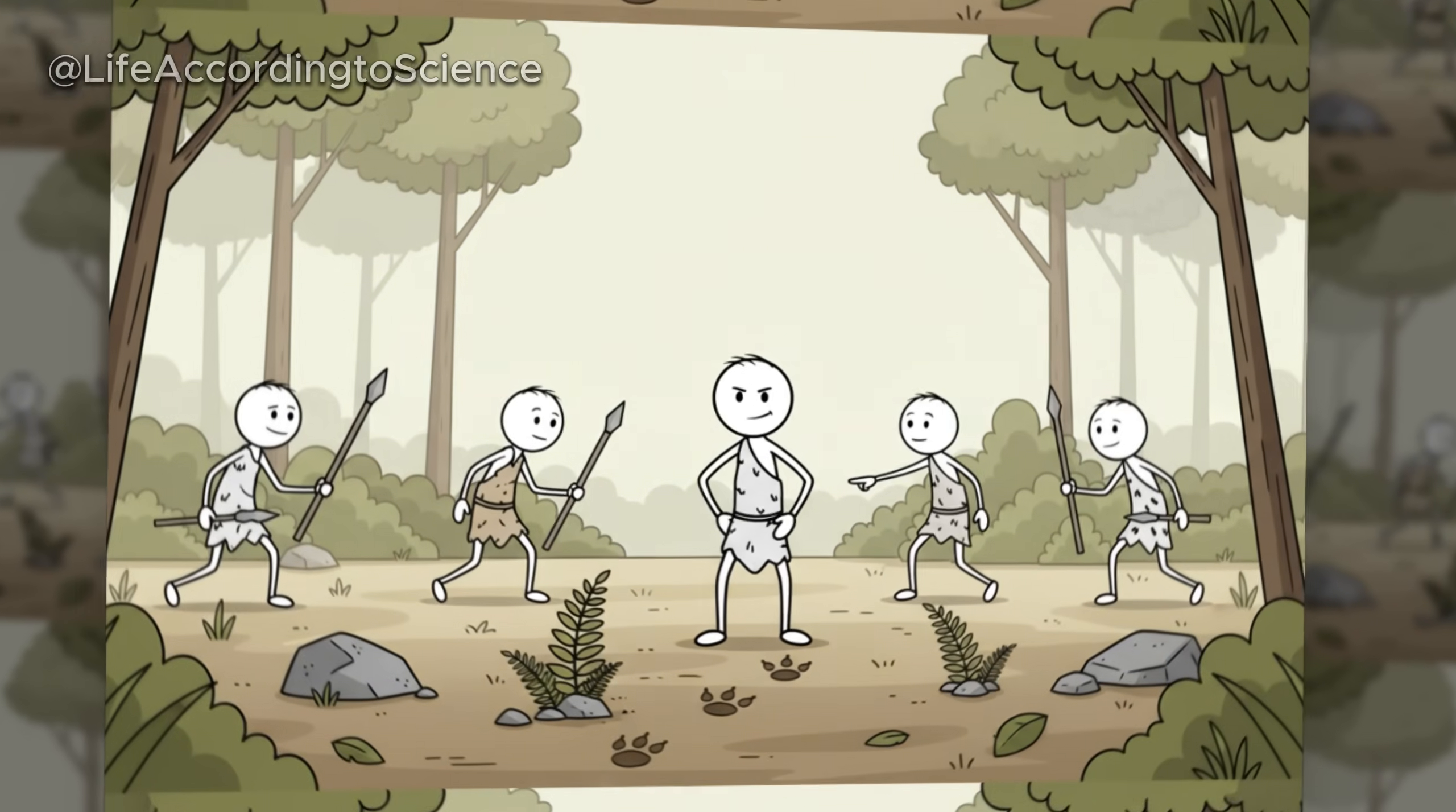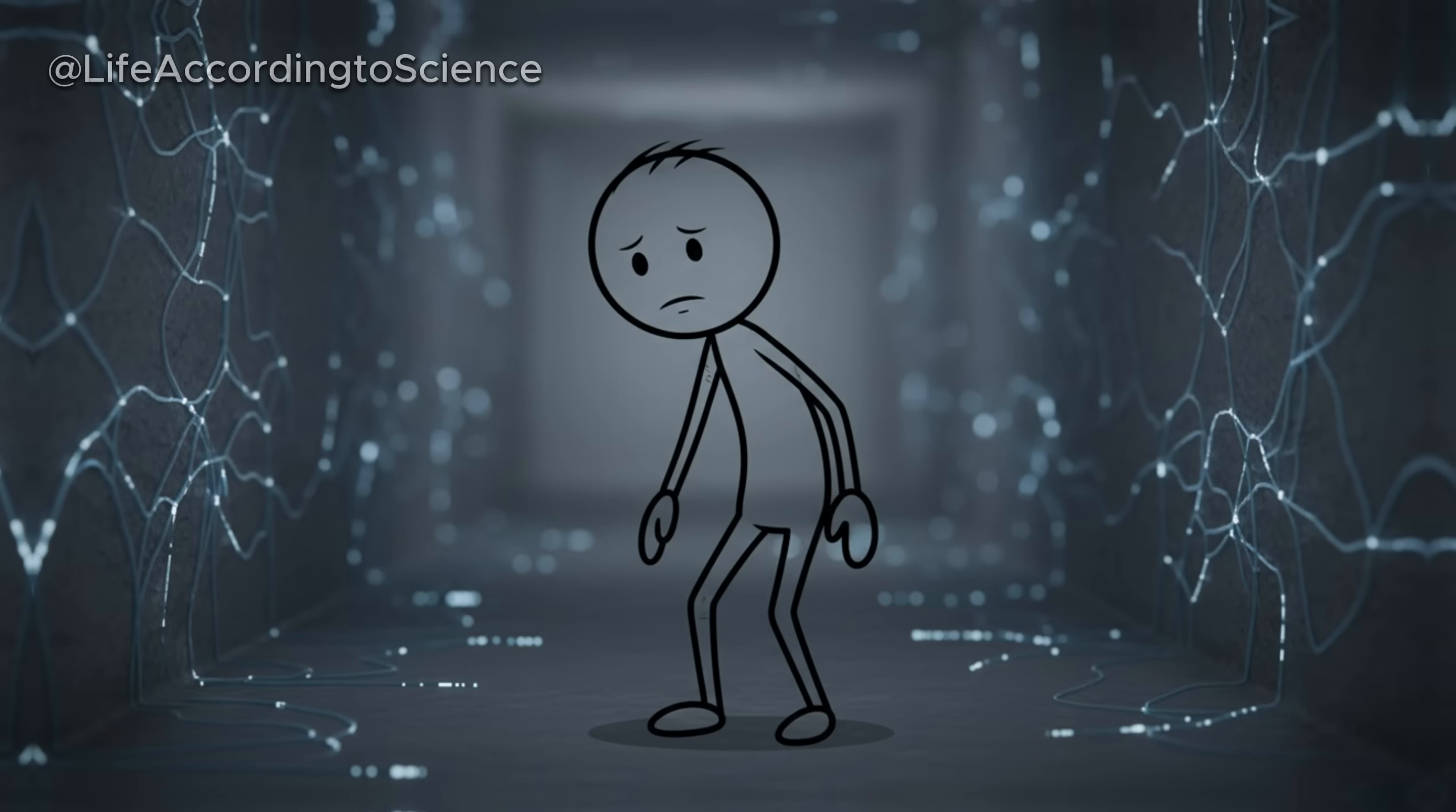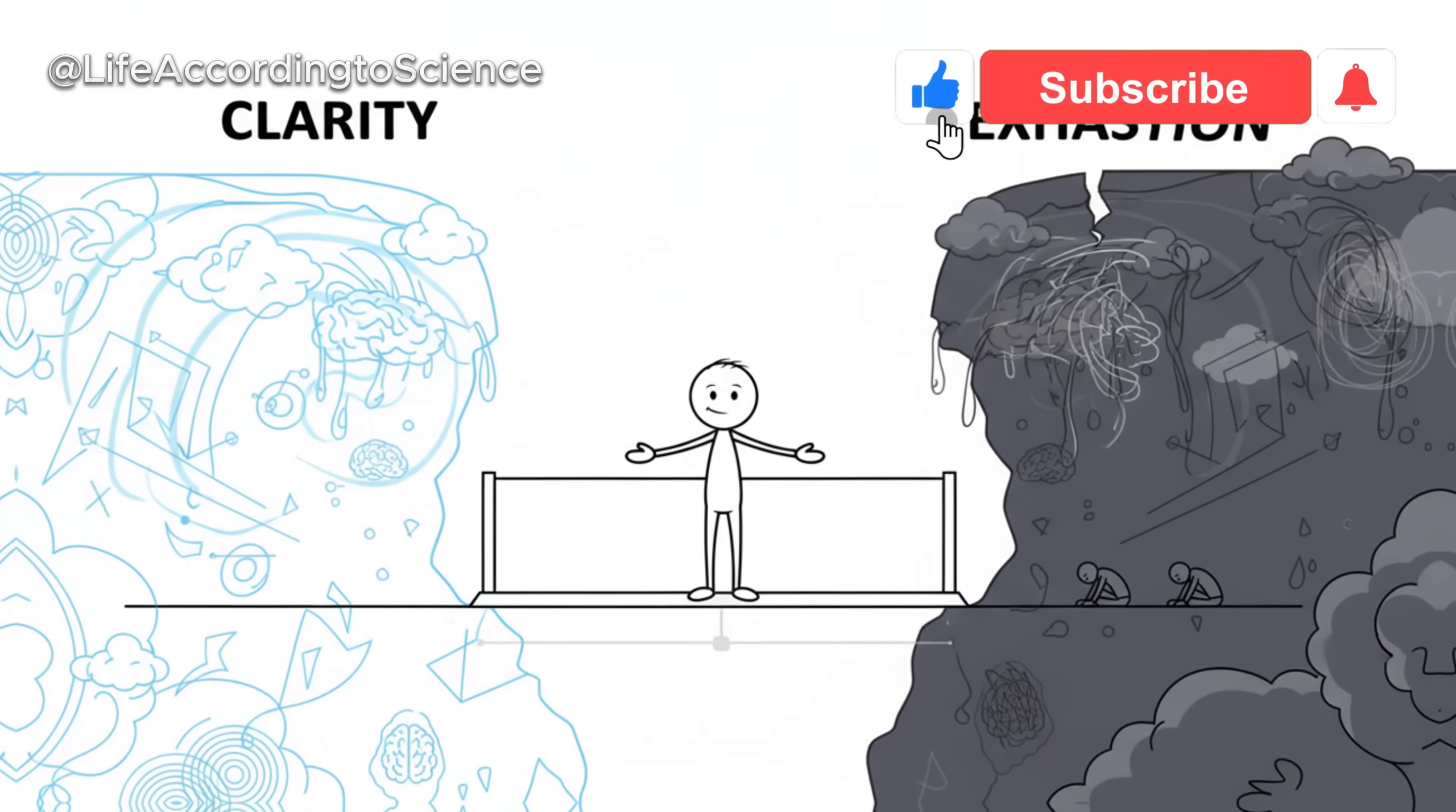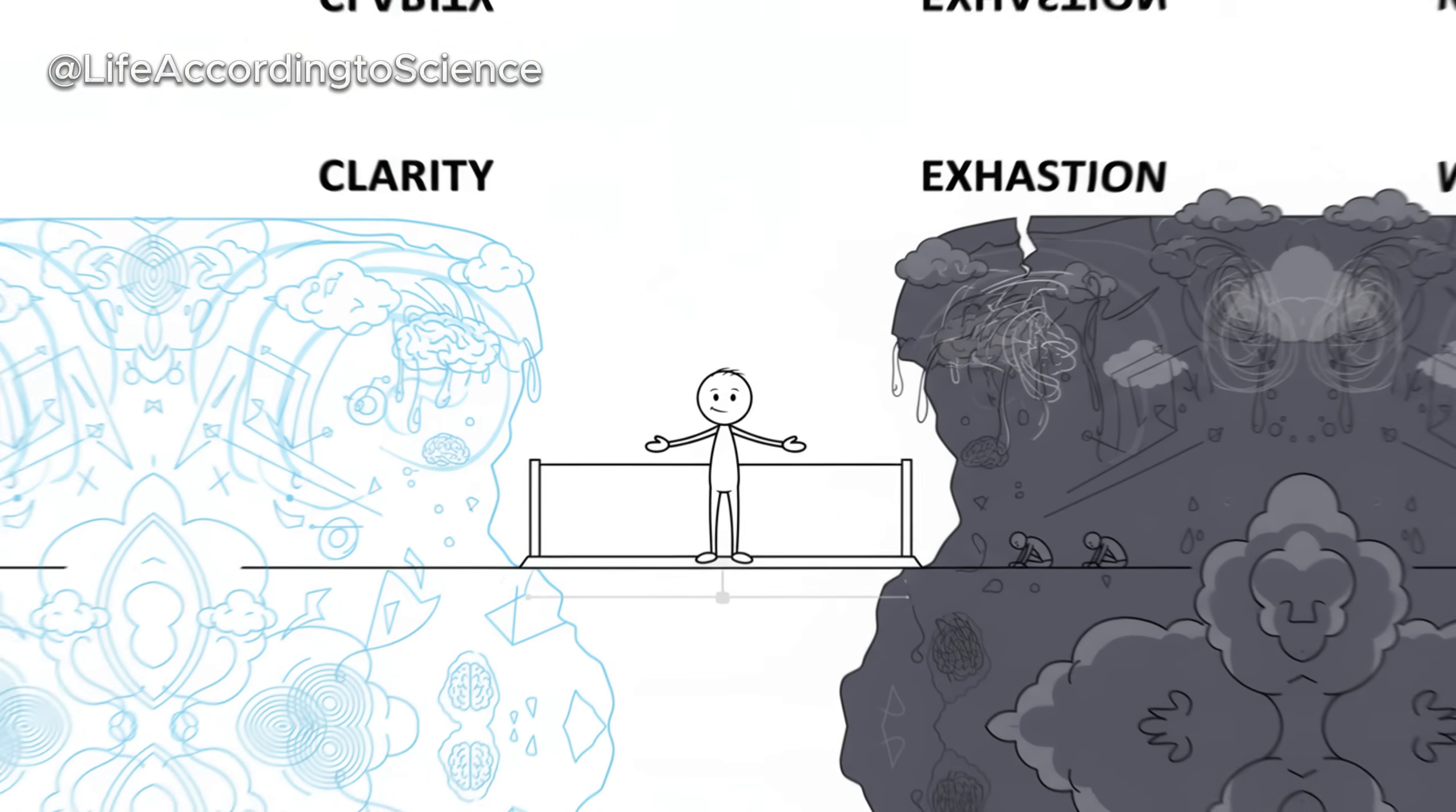Scientists believe this may be linked to increased production of brain-derived neurotrophic factor, BDNF, a protein that supports neuron growth and communication. However, this clarity doesn't last forever. When the body starts breaking down muscle for glucose production, cognitive functions can suffer. Concentration weakens, memory declines, and the brain begins to slow communication between neurons to conserve energy. It's a delicate balance. For a time, fasting sharpens the mind, but prolonged deprivation eventually dims it. The brain, just like the body, can adapt magnificently, but only up to a point before preservation turns into exhaustion.